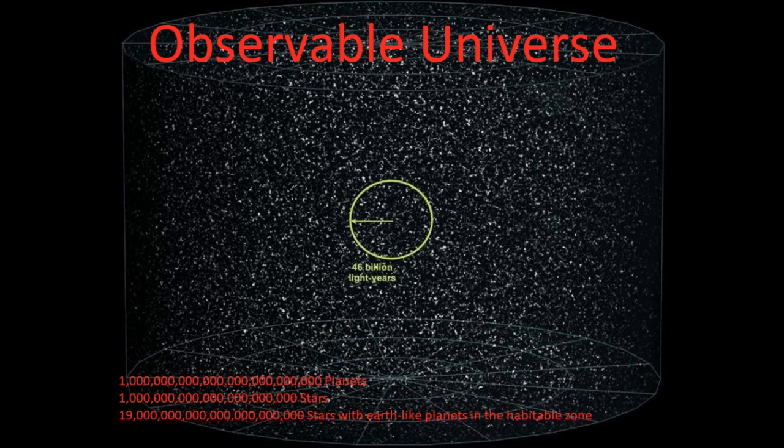Aliens are fucking real. There are around 10 to the 24th power planets in the observable universe. There are around 10 to the 21st power stars in the observable universe. And there are 19 sextillion stars with at least one Earth-like planet in the habitable zone.